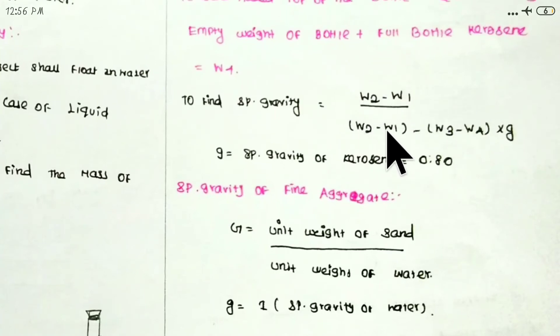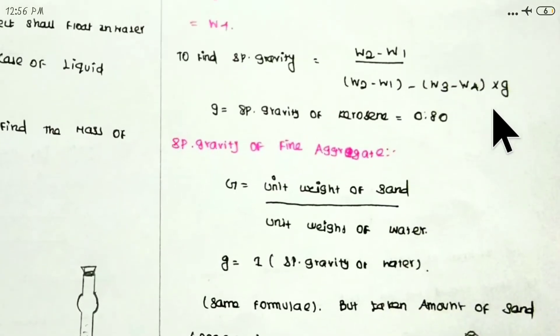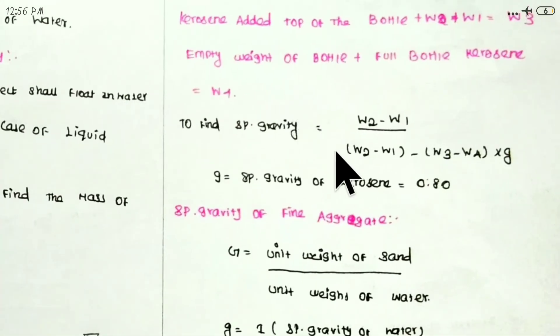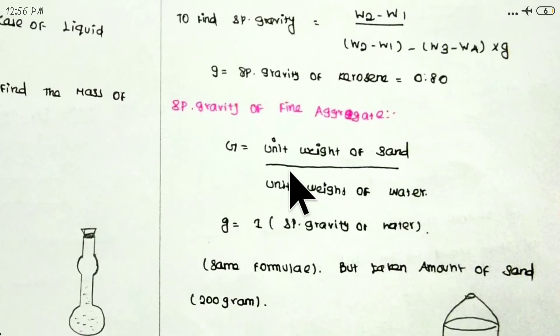Using the formula: (W2 - W1) divided by (W3 - W4), multiplied by G. G is the kerosene specific gravity, which is 0.80. Using this formula, the specific gravity of cement is 3.15. For sand, we use water instead of kerosene.